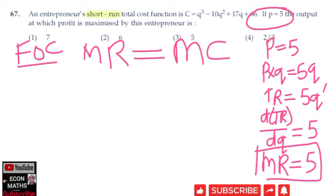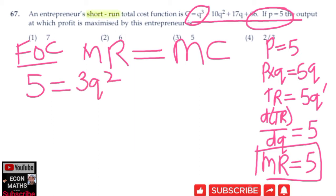So P = 5 is also our marginal revenue, meaning MR = 5. Now for marginal cost, we differentiate the total cost function with respect to quantity. The derivative of Q³ is 3Q², the derivative of -10Q² is -20Q, and the derivative of 17Q is 17. So marginal cost = 3Q² - 20Q + 17. Setting MR = MC gives us: 5 = 3Q² - 20Q + 17. This is our first order condition.